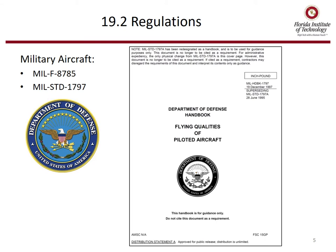For military aircraft, there are a couple of references. One is MIL-F 87-85 and another is MIL-STANDARD 1797. MIL-STD-1797 currently has a REV-B, but that's not available for Public Release Distribution Unlimited. You can, however, get 1797-A, shown here, that was released in the 1990s.